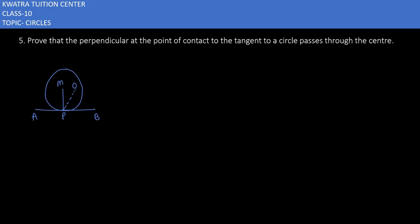O is our center of the circle, and we have MB perpendicular to AB. Let's say that it does not pass through the center. Okay, we assume that O is the center.